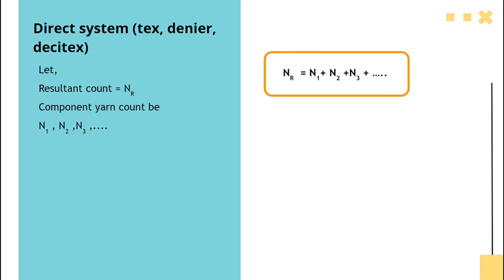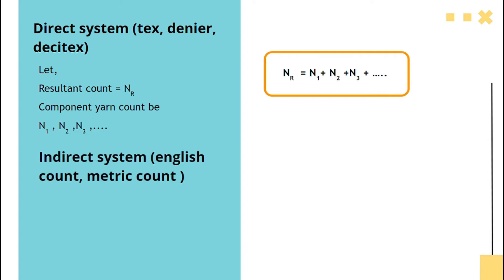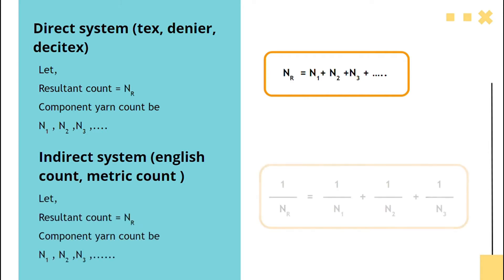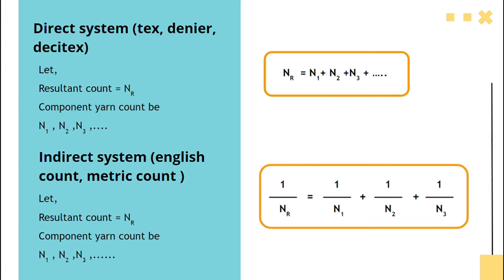N1 plus N2 plus N3, etc. Similarly, for indirect systems such as English count (Ne) and metric count (Nm), the formula is expressed as: 1/Nr equals the sum of 1 over individual yarn counts, that is 1/Nr equals 1/N1 plus 1/N2 plus 1/N3, etc.